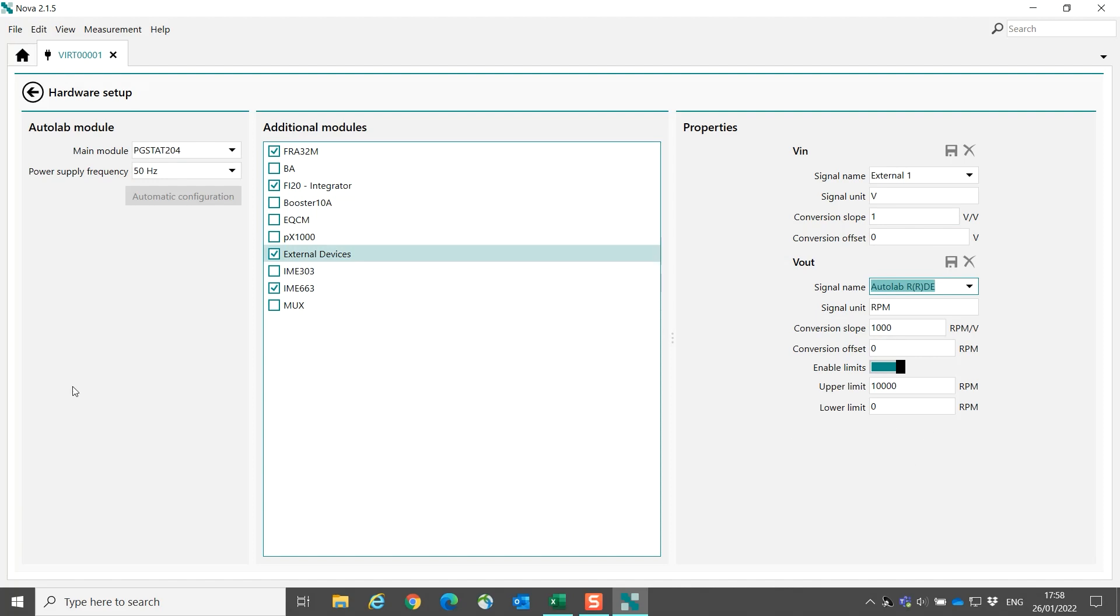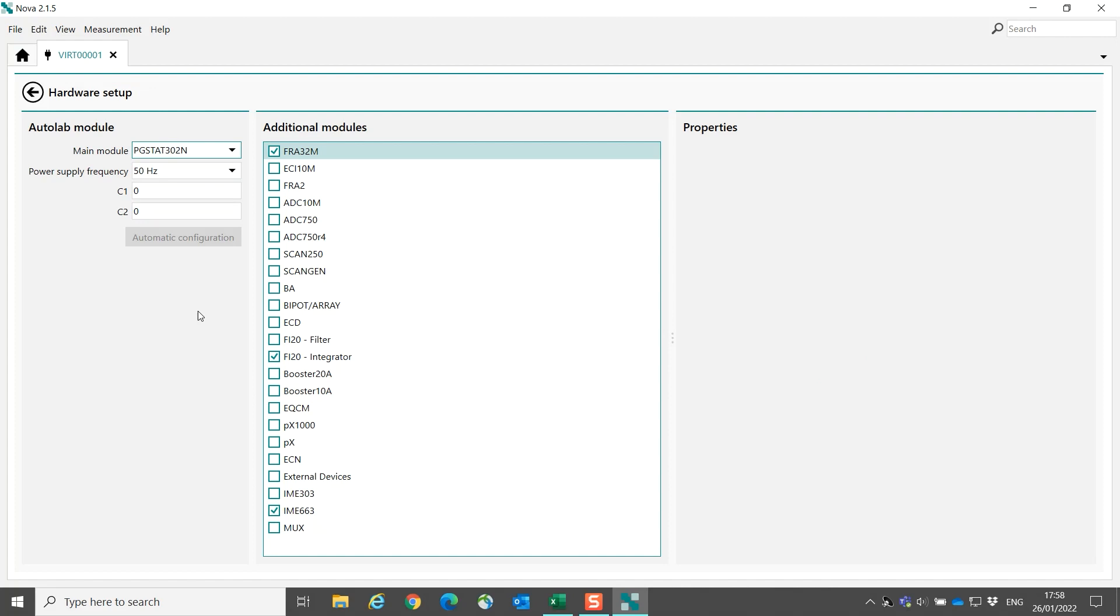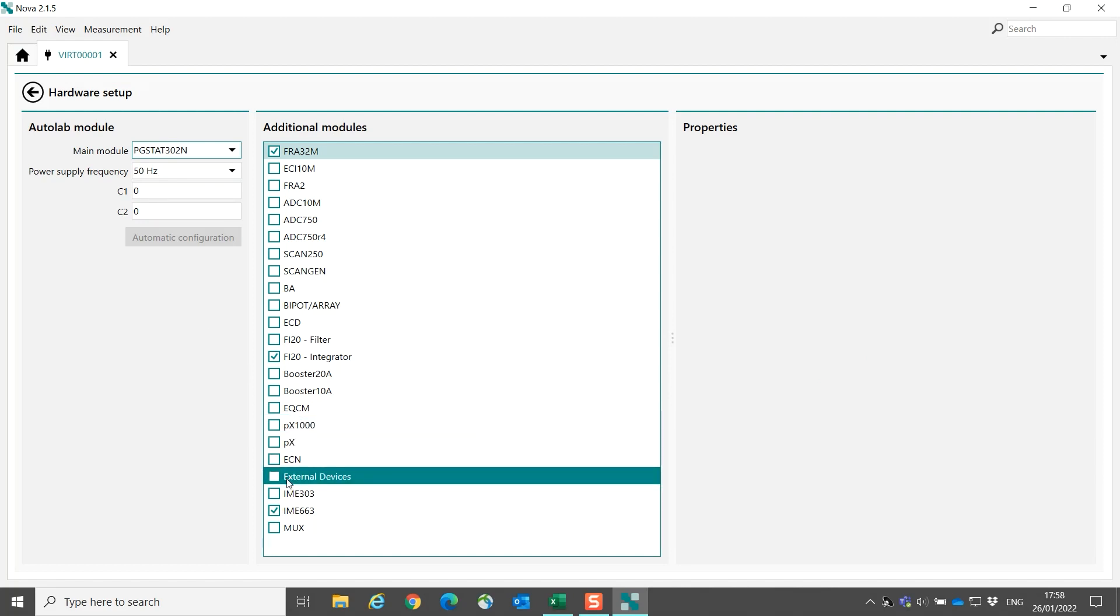When you have a PG-Stat 302N, for example, you also have to configure the external devices. But now the controlling goes through the DAC, the Digital to Analog Conversion 164, which is in all PG-Stat 302N instruments. Again, select the Autolab RDE.